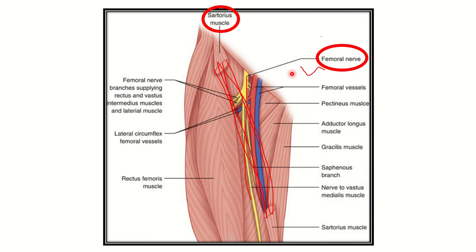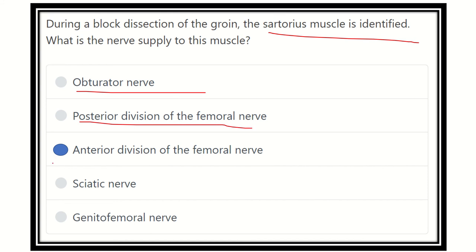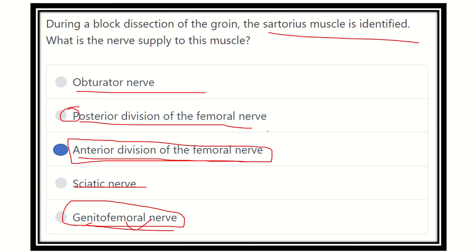The sartorius muscle lies most closely to the femoral nerve. The posterior division of the femoral nerve is not applicable since the muscle lies anteriorly. The sciatic nerve lies at the back of the thigh, but this muscle is at the front. The genitofemoral nerve's femoral branch is a cutaneous or sensory branch supplying the upper medial part of the front of the thigh, so it does not supply this muscle. Therefore, our final answer is the anterior division of the femoral nerve, which supplies the sartorius muscle. Thank you.